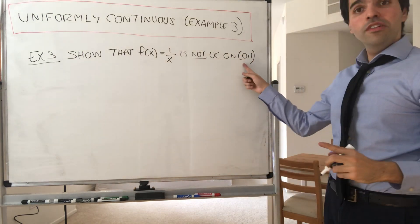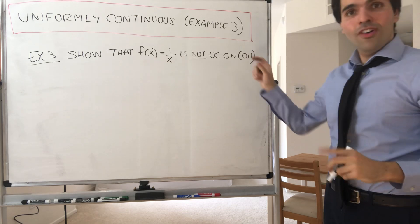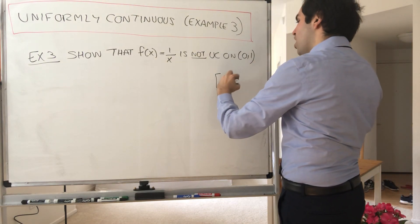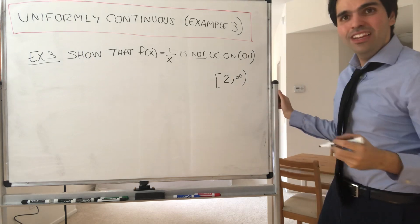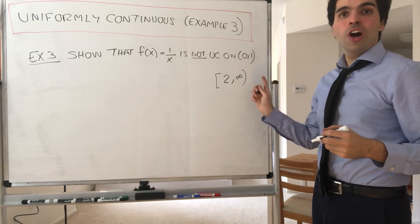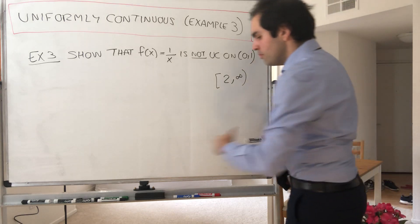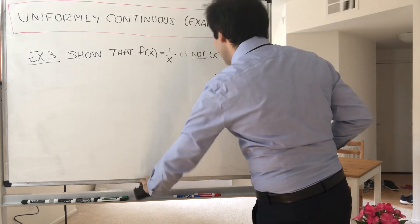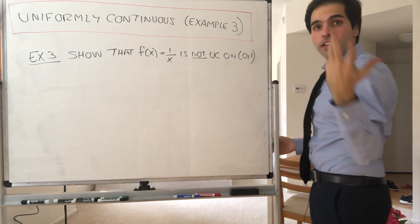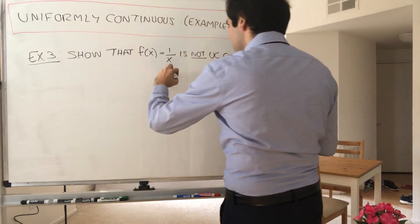Before I do this, be very careful: it turns out this function is uniformly continuous on the interval [1, infinity), so the interval will matter somehow. And before I prove this, let me tell you at least intuitively why it shouldn't be uniformly continuous.